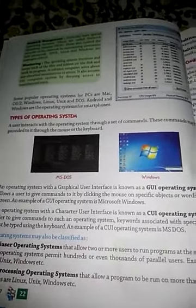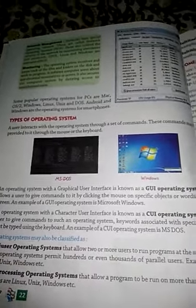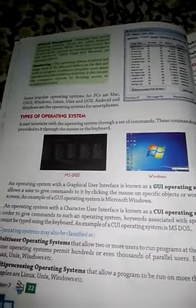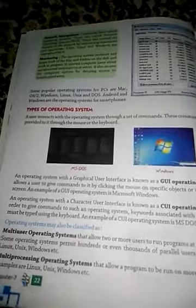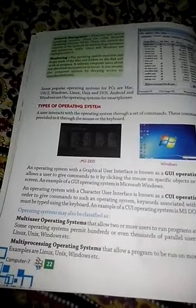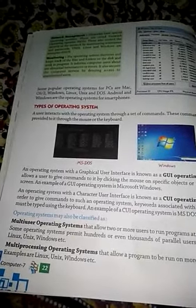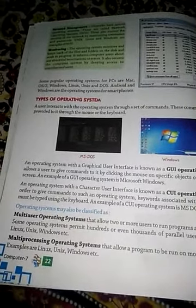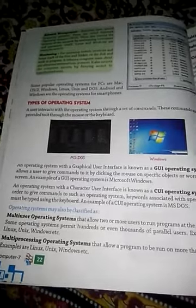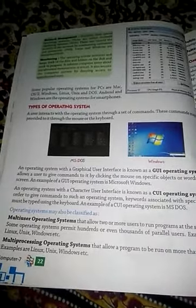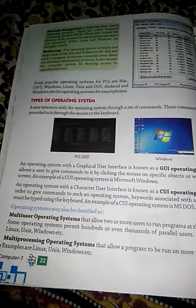MS-DOS is an example of a CUI operating system. There are also multi-user operating systems, which allow multiple users to use the system simultaneously.